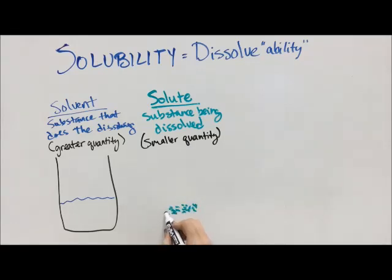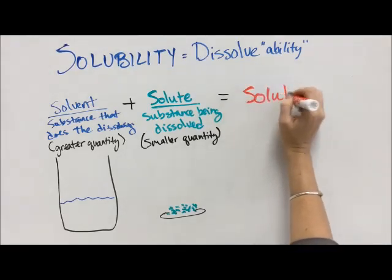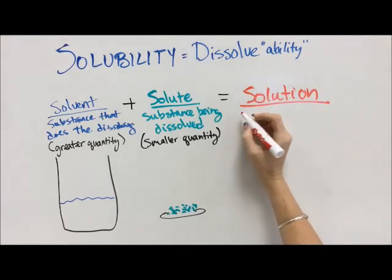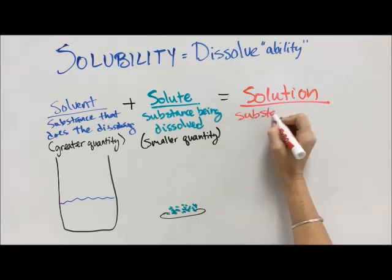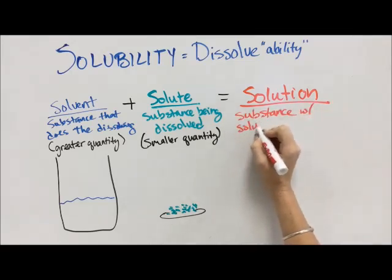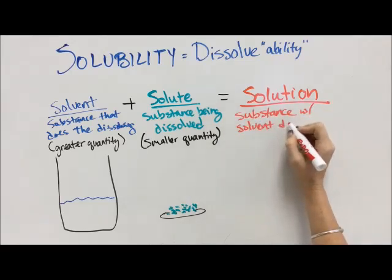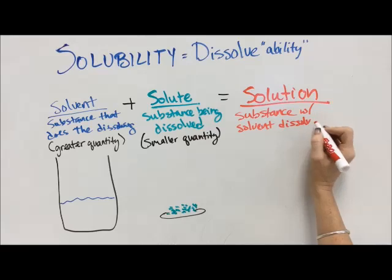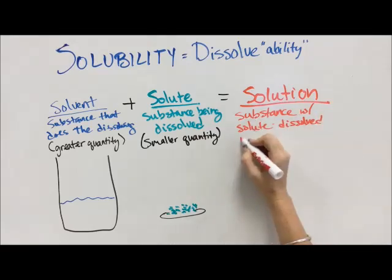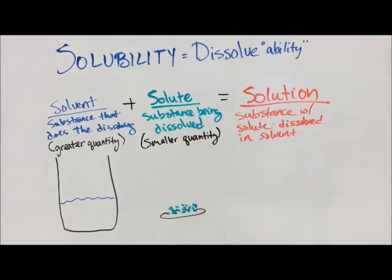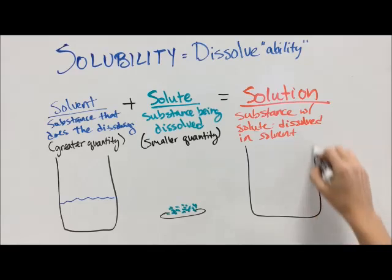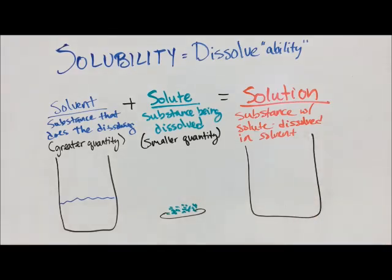Solids, liquids, and gases can be dissolved in solids, liquids, and gases. But in this case, we're going to take a solid solute and add it to a liquid solvent to give us a solution — which is a substance with a solvent that has dissolved a solute, or with a solute dissolved in a solvent. Something that has stuff dissolved in it — that's what a solution is.